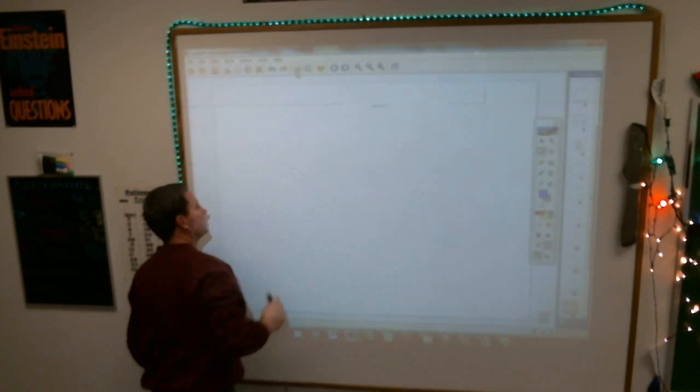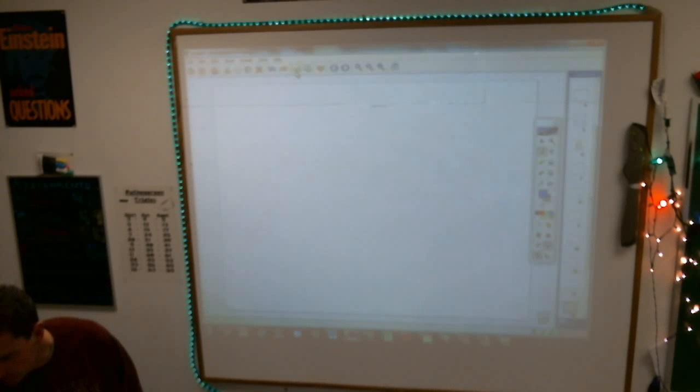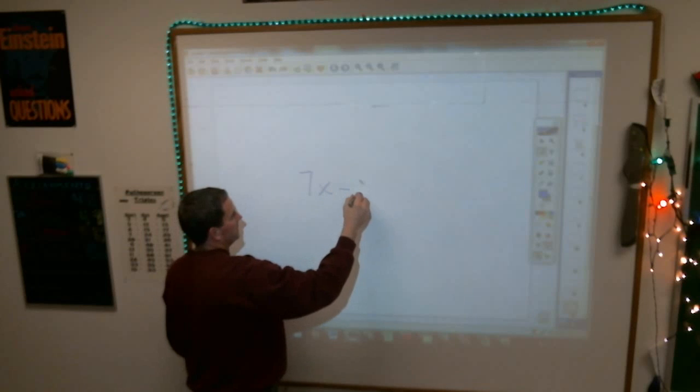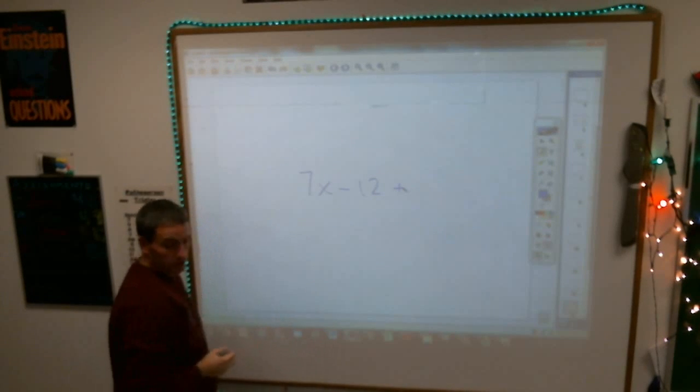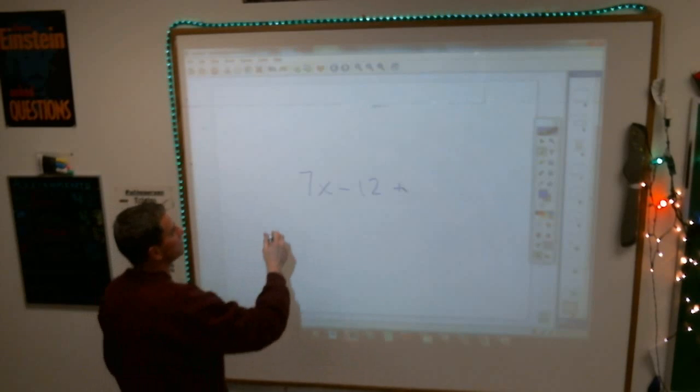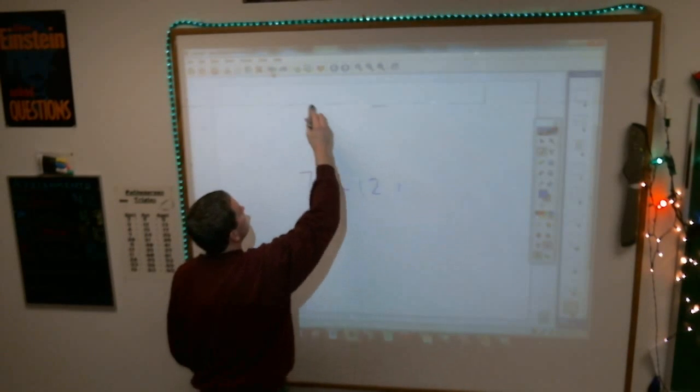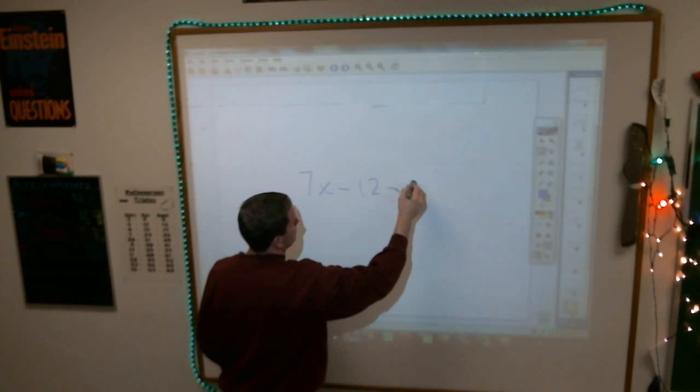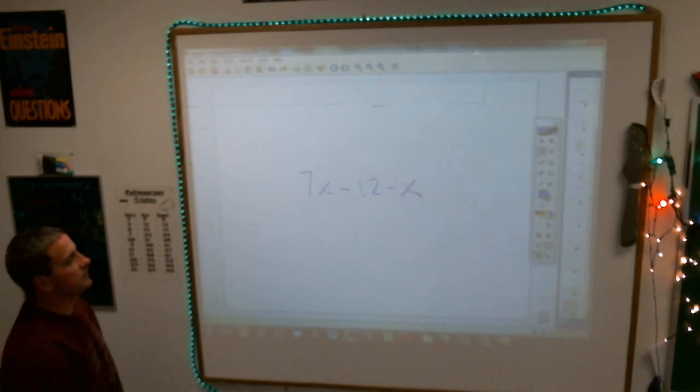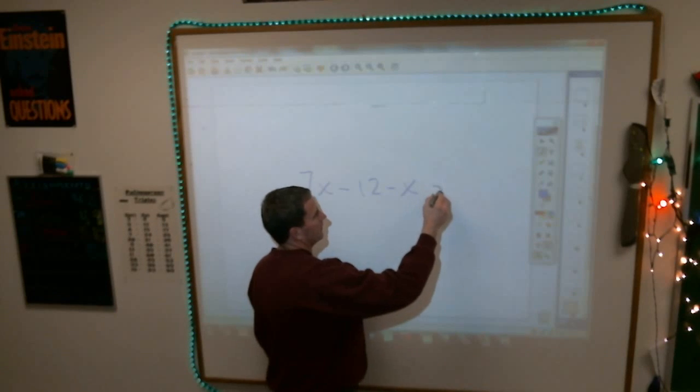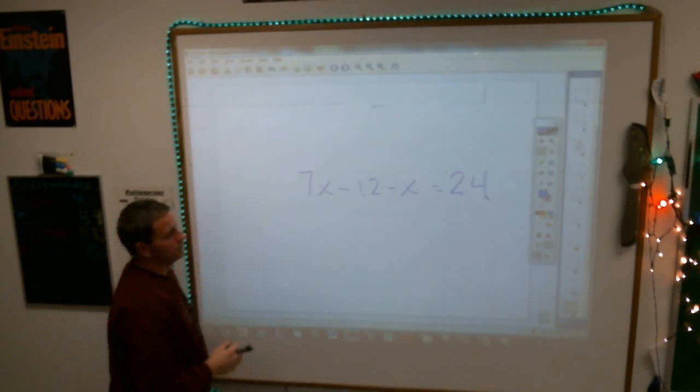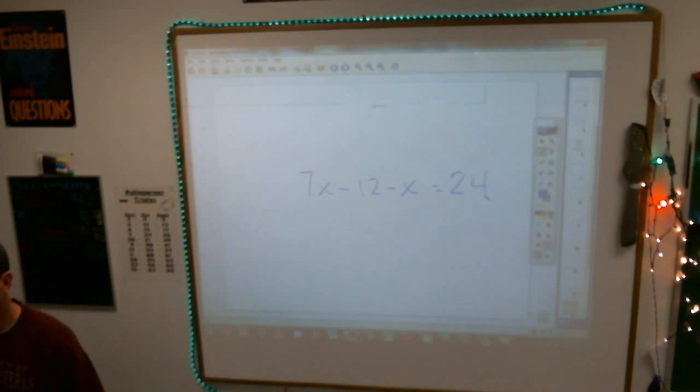I'm going to give you one to do. I am reasonably sure that two or three of you will be able to do this. 7x minus 12 plus oh, wait, I'm sorry. Minus x. 7x minus 12 minus x equals 24. Do that for me if you will.